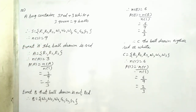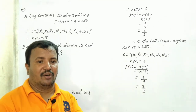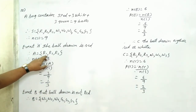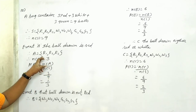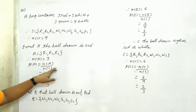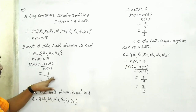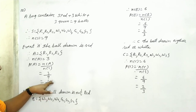Event A: the ball drawn is red. A is equal to {R1, R2, R3}. Number of A is equal to 3. Probability of A is equal to number of A upon number of S, that is 3 upon 9. Simplifying: 3 ones are 3, 3 threes are 9, so the answer is 1 upon 3.